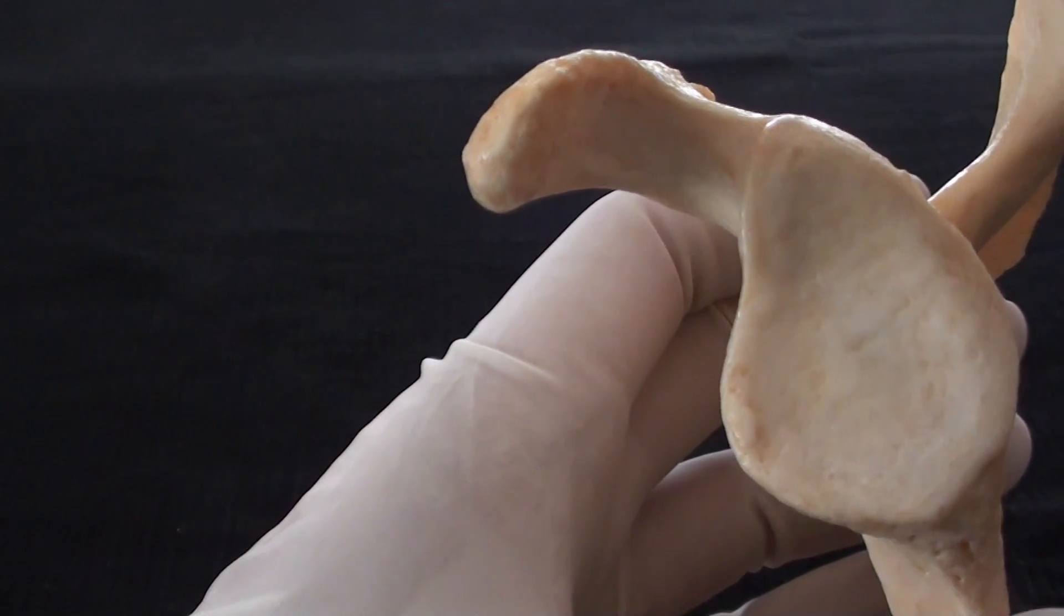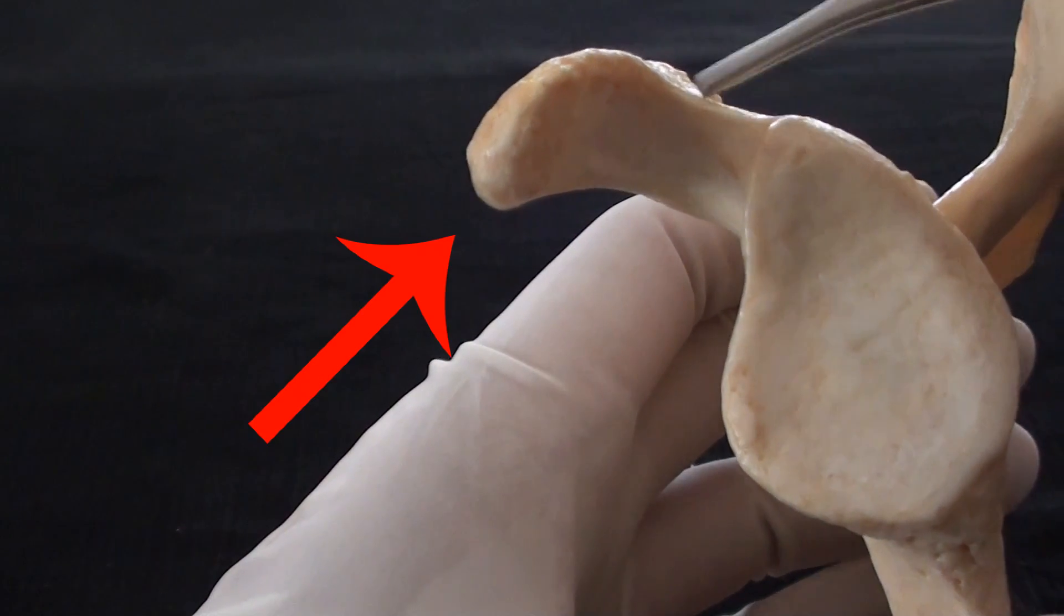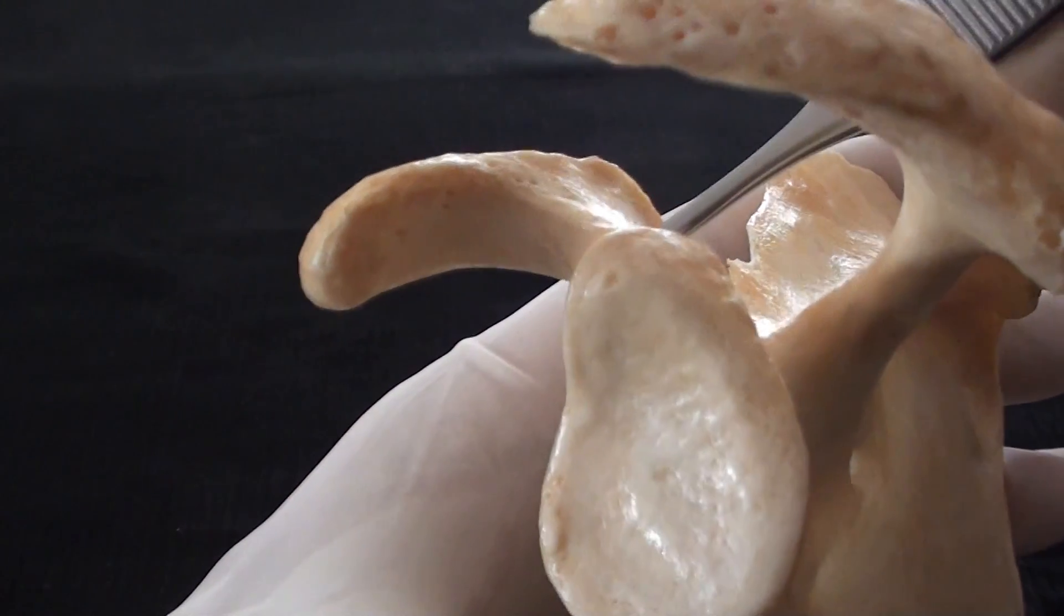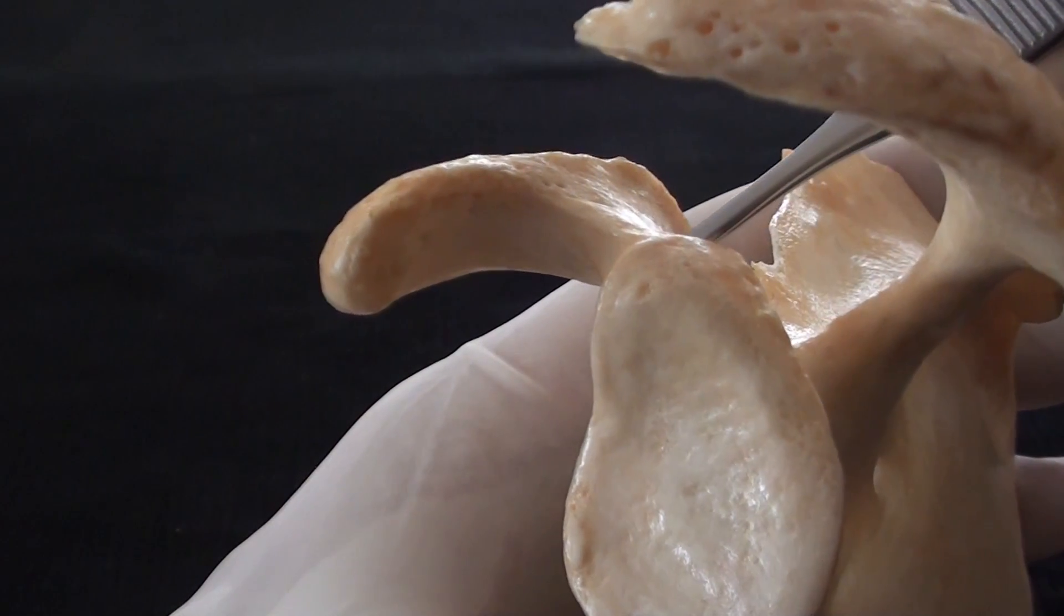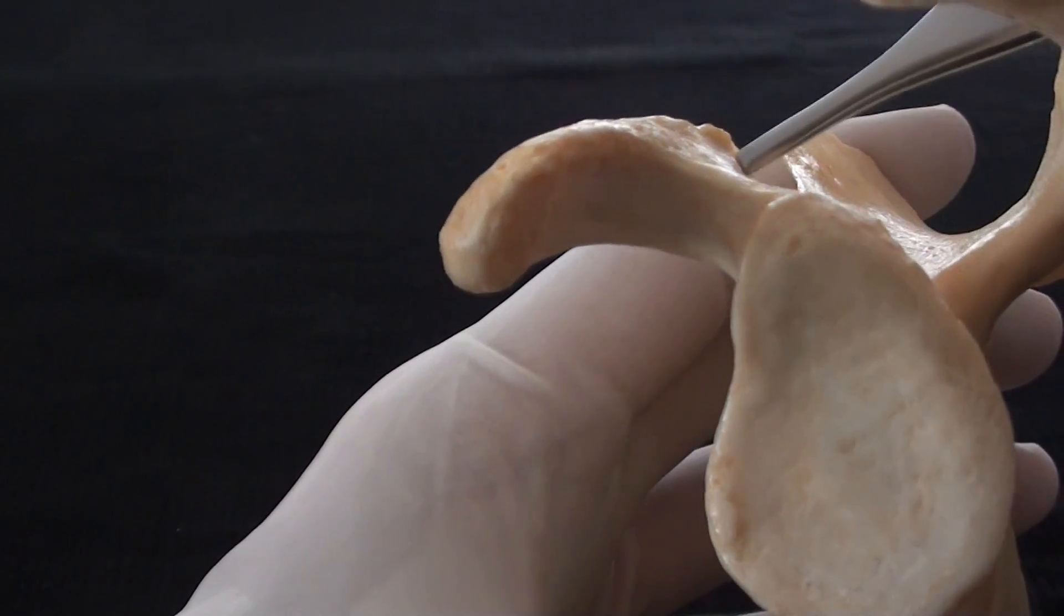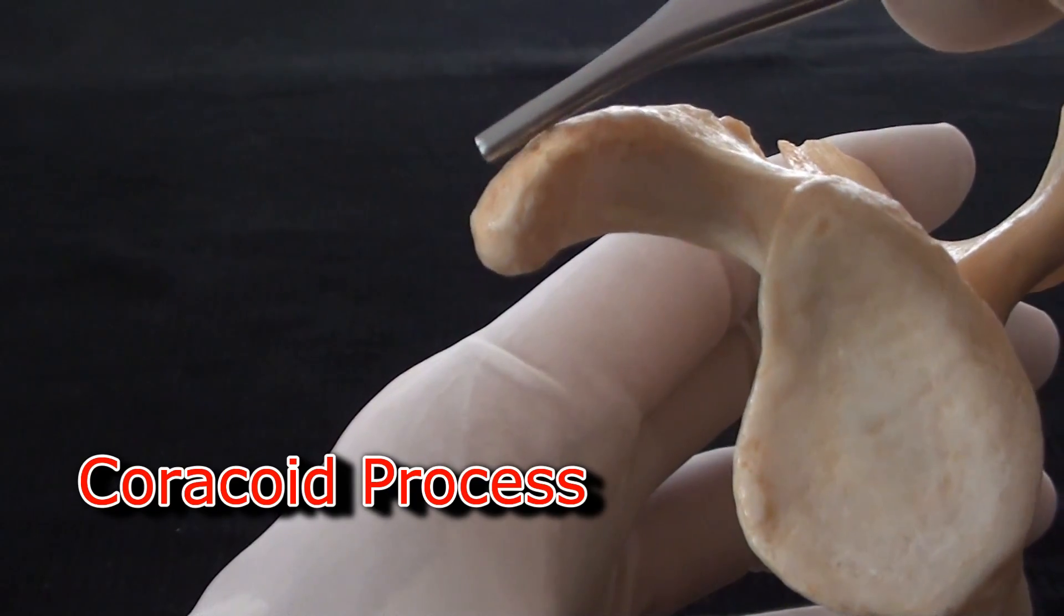Finally we need to identify this projection that arises with its base from the superior margin of the scapula close to the glenoid fascia. Its name is the coracoid process.